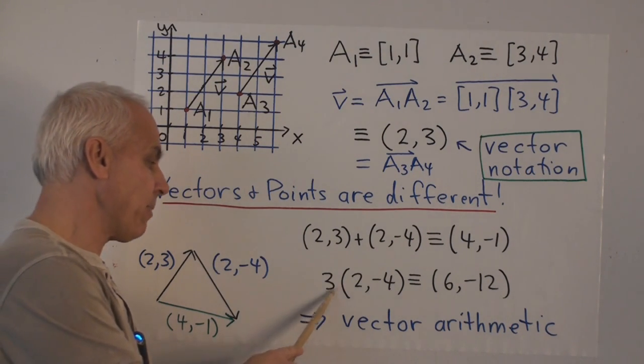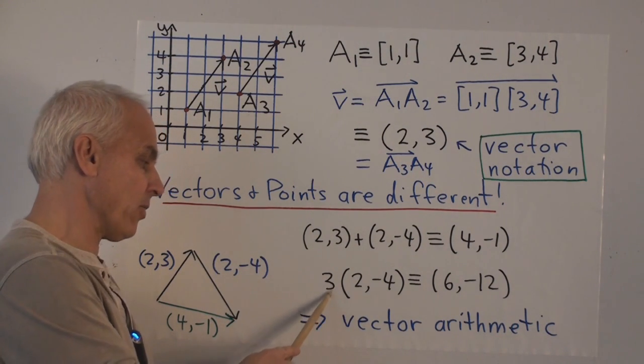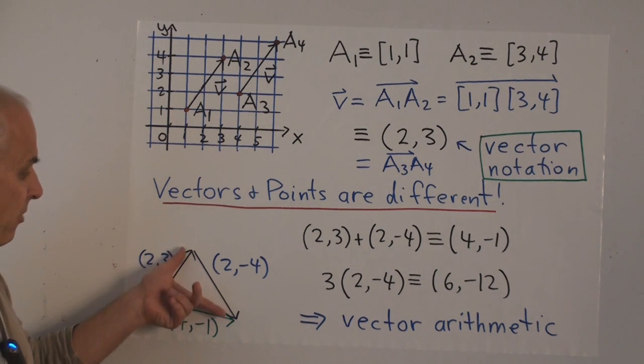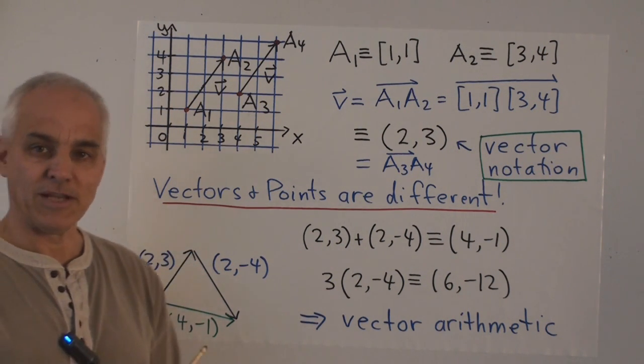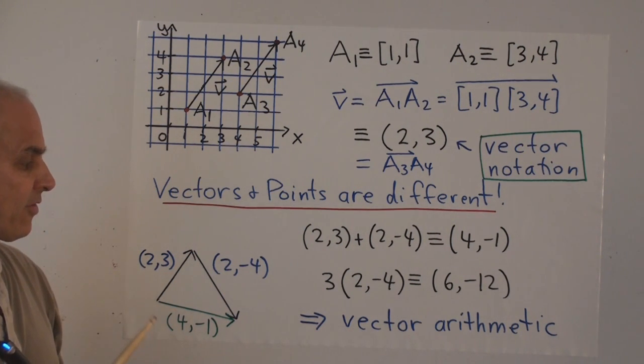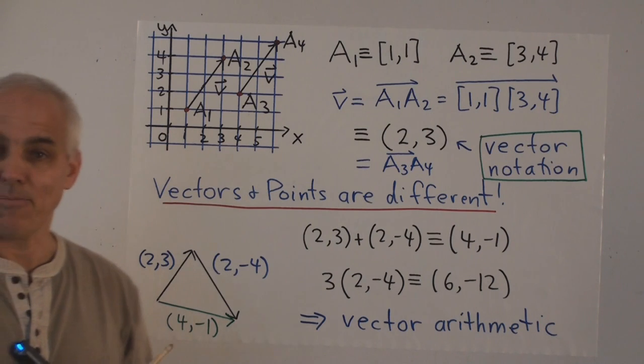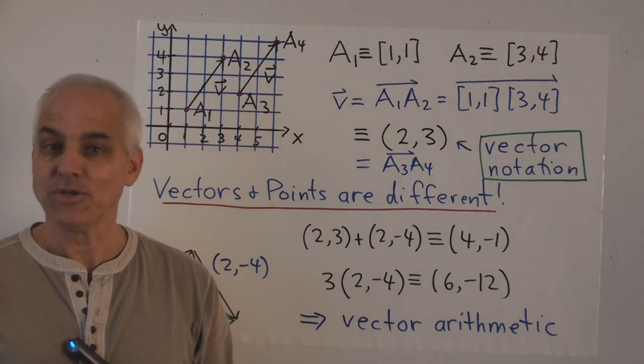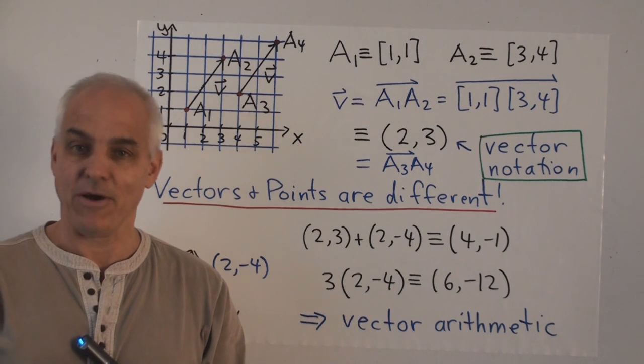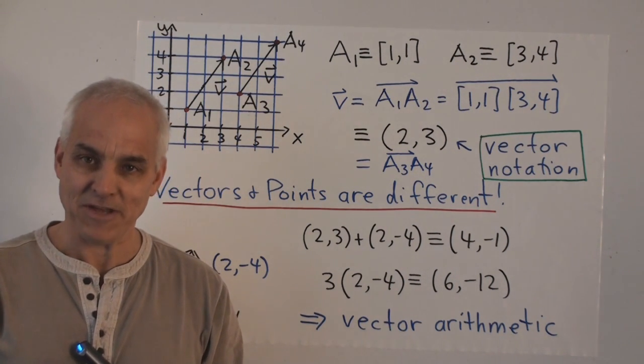In a similar way, we can multiply a vector by a scalar, or a number. So when we say three times the vector 2, minus 4, that would be a vector which is in the same direction, but just three times as long. So vector arithmetic is very natural and important. And next time we're going to use it to introduce some other vector geometrical objects, including parallelograms. I hope you'll join me for that.